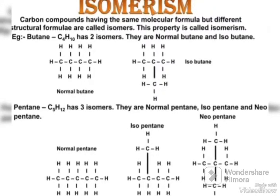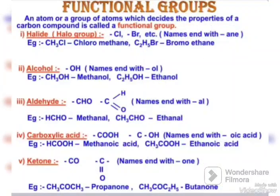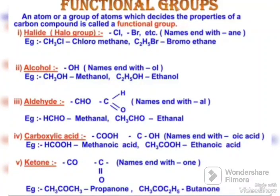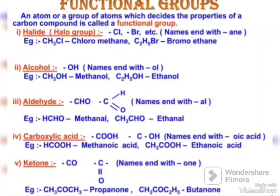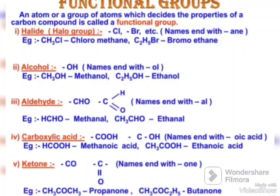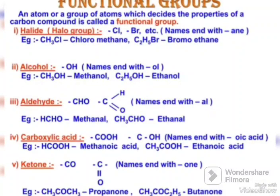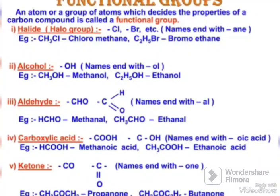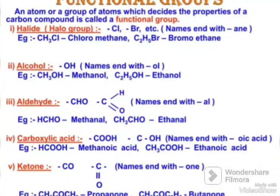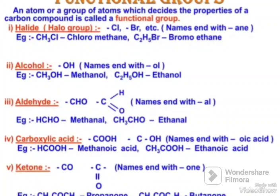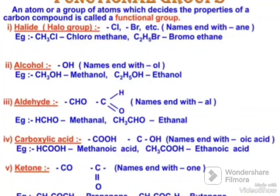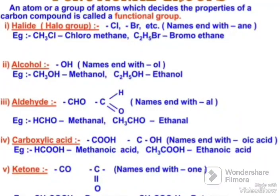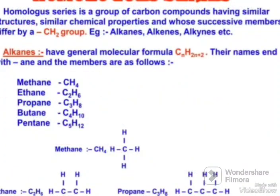You can also take the example of pentane, which has normal pentane and isopentane. Now about functional groups: an atom or a group of atoms which decides the properties of carbon compounds is called a functional group. Halide group includes Cl, Br, etc. Alcohol means the OH group, as in ethanol. Aldehyde means the CHO group, as in ethanal and methanol. Carboxylic acid is the COOH group and ketone is the CO group. These are all the functional groups.